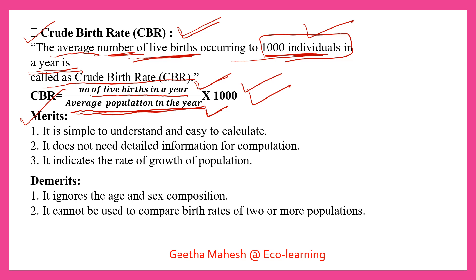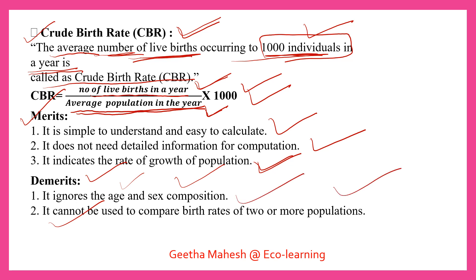Crude birth rate is simple to understand and easy to calculate compared to other measures like age-specific, general fertility, or total fertility rates. It does not need detailed information for computation, and it indicates the rate of growth of population. However, it ignores age and sex composition, and it cannot be used to compare the birth rate of two or more population groups.